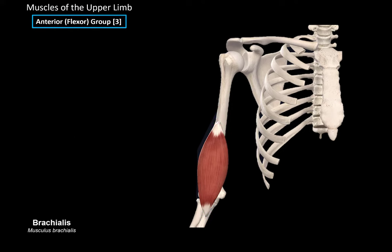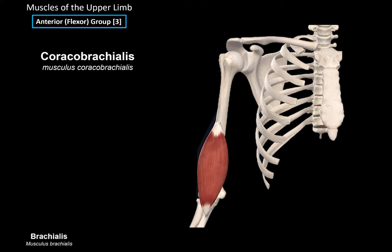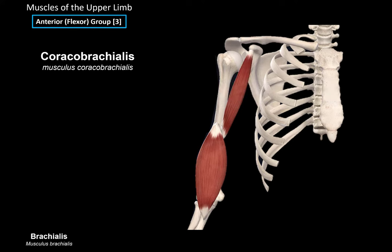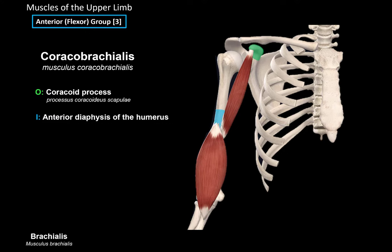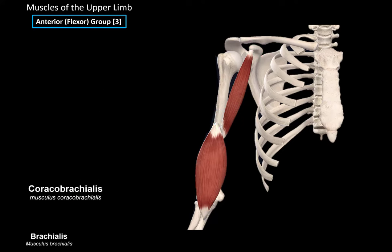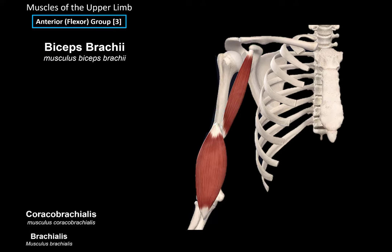The next muscle is the coracobrachialis muscle. As the name says, it originates from the coracoid process of the scapula and inserts at the anterior diaphysis of the humerus. When the fibers of this muscle contract, it flexes the arm, adducts the arm, and also internally rotates the arm.